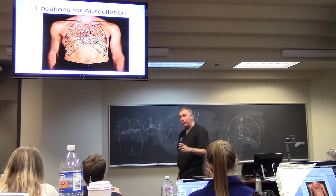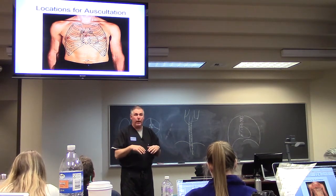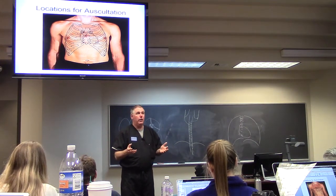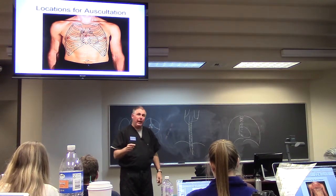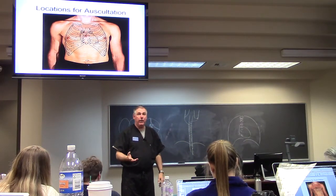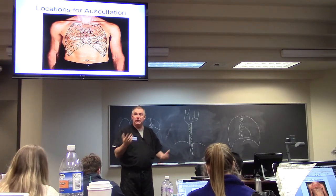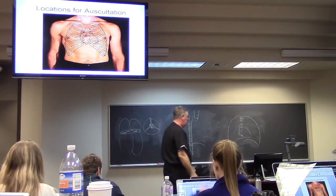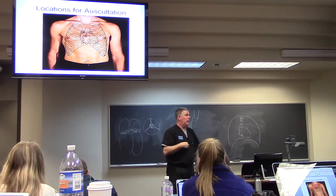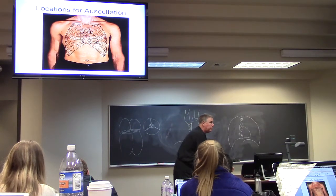Heart murmurs are usually caused by defective valves that don't open right or don't close right, producing an abnormal sound. For aortic stenosis or aortic regurgitation, the best place to hear it is the right second intercostal space just beside the sternum. If you hear a heart murmur, where it sounds the loudest gives you an idea of which valve has the problem.